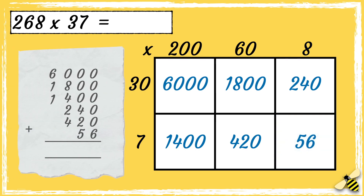Now that everything has been multiplied, we can add the numbers inside the box to get our answer. So we have 6. Then 4 add 2 add 5 is 11. Then 8 add 4 add 2 add 4 add 1 is 19. And then 6 add 1 add 1 add 1 is 9. So the answer is 9,916.